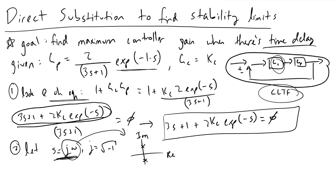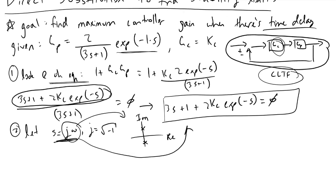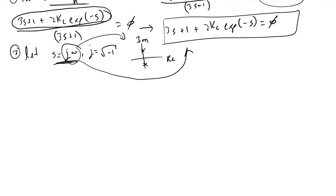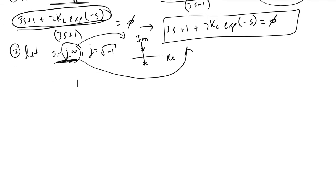If we directly substitute s equals jω into this equation, what we'll find is that we end up getting 3 times jω plus 1 plus 2Kc exponential minus jω.